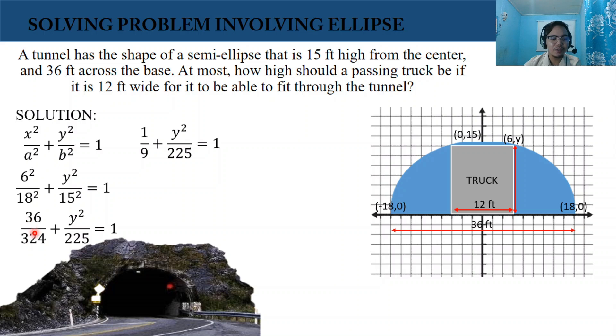Then 36 over 324 are both divisible by 36. So we have 1 over 9 plus y squared over 225 equals 1.